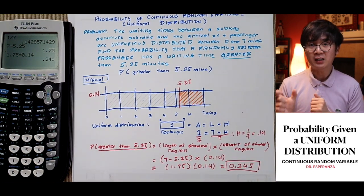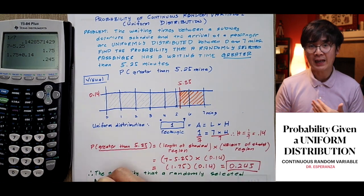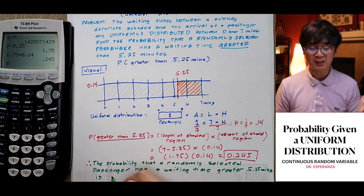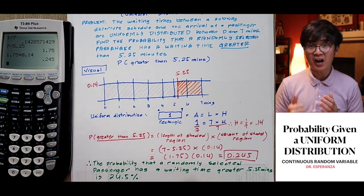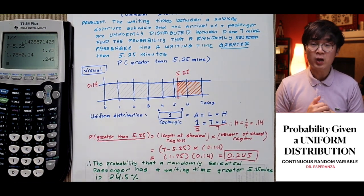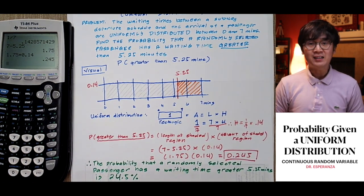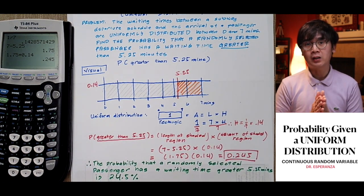That's the area of the shaded region, and that's the probability we're looking for. The probability that a randomly selected passenger has a waiting time greater than 5.25 minutes is about 24.5%. That's the idea of solving uniform distribution.